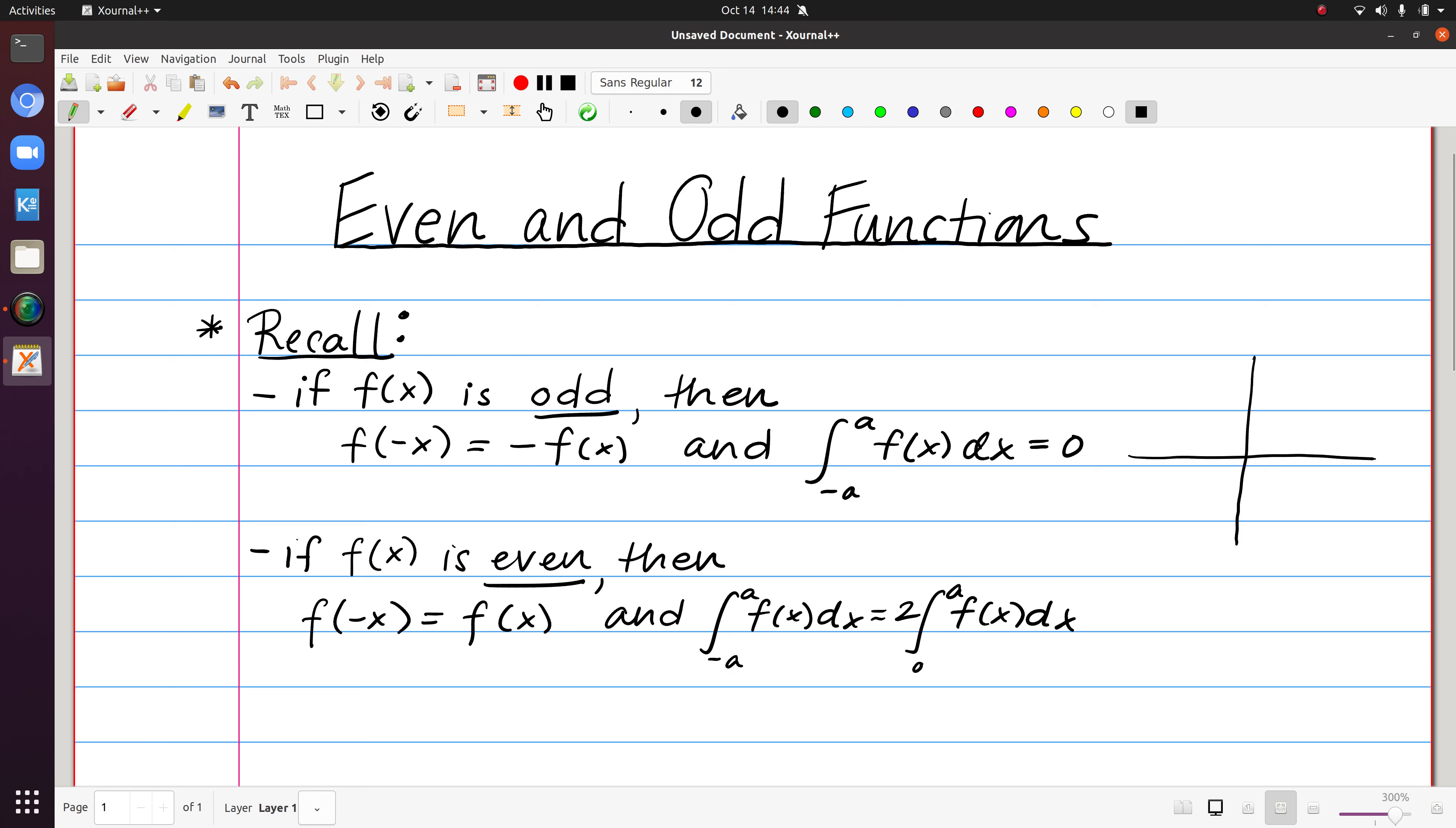So if we were to think about a generic illustration, if I know my function looks like this from 0 to a, then for an odd function, we would expect it to look like this from minus a to 0.